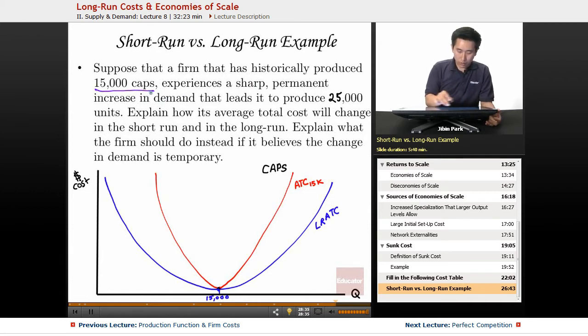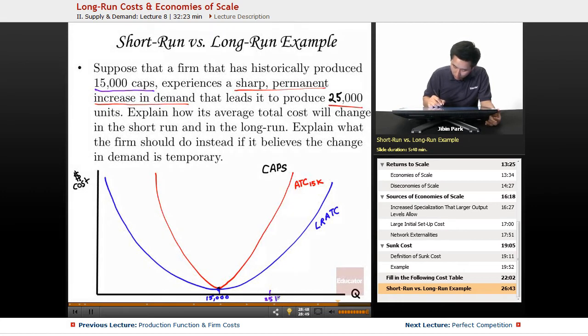A firm has historically produced 15,000 caps, experiences a sharp permanent increase in demand that leads it to produce 25,000. So let's say for some reason they make 25,000 here. What ends up happening here is that you have point A right here.